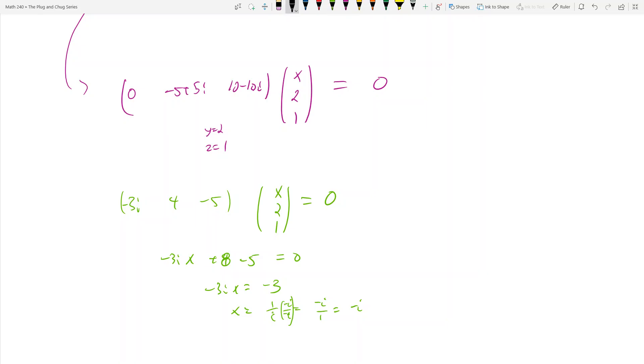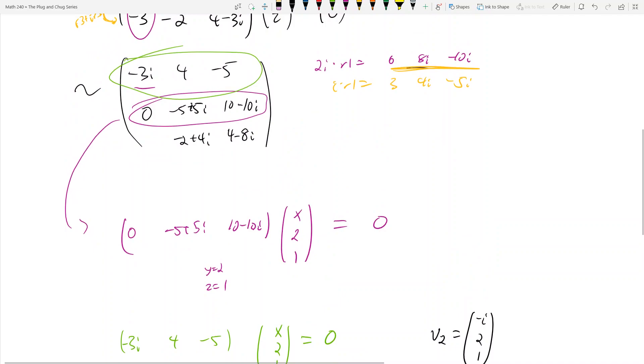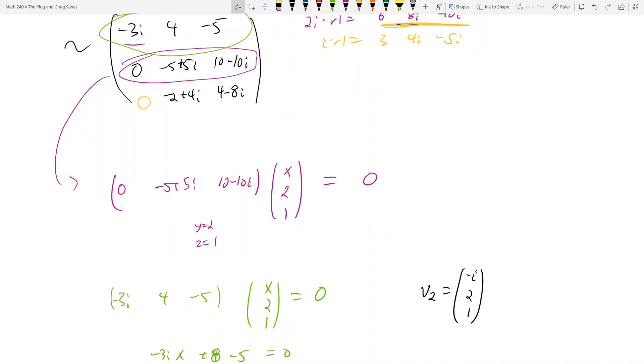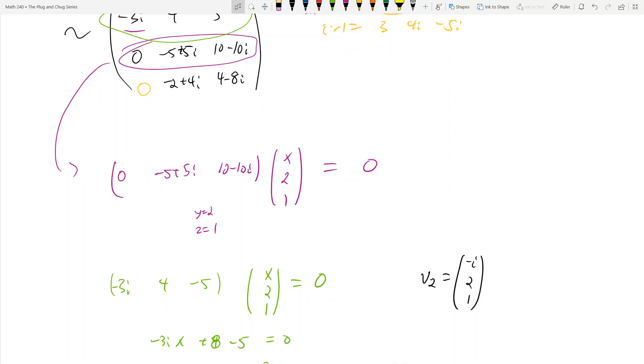So x is -i, which gets me my complex-valued eigenvector v2 equals (-i, 2, 1). Notice we didn't even have to use the last row to figure this out. You can use the last row as a check. This is how you find eigenvectors.